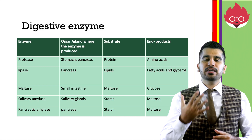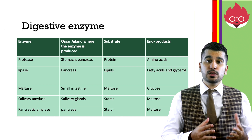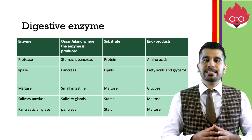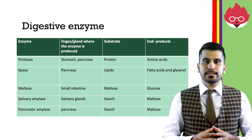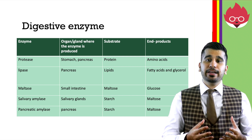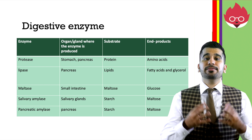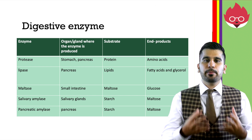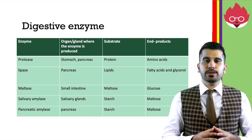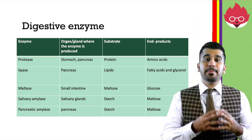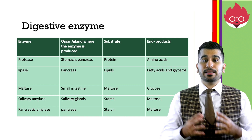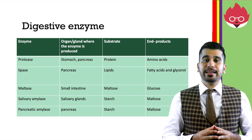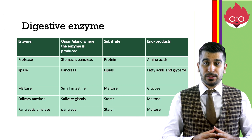There are five digestive enzymes that you are required to remember. Protease, made in the stomach and pancreas, breaks down protein into amino acids. Lipase, made in the pancreas, breaks down lipids into fatty acids and glycerol. Maltase, made in the small intestine, breaks down maltose into glucose. Salivary amylase, made in the salivary glands, breaks down starch into maltose. And finally, pancreatic amylase, made by the pancreas, also breaks down starch into maltose.